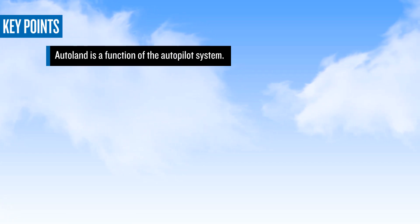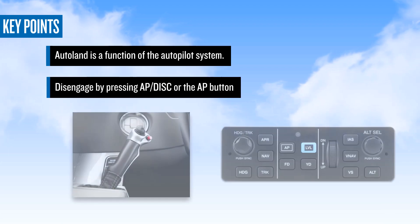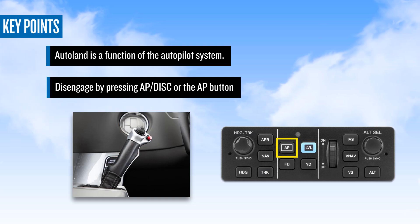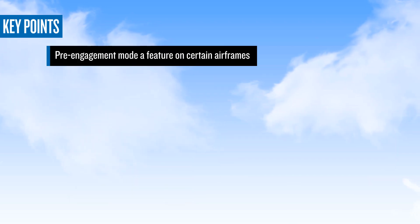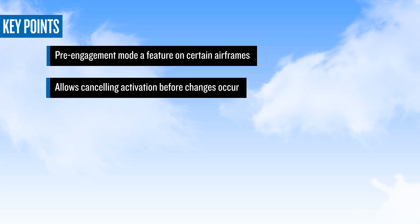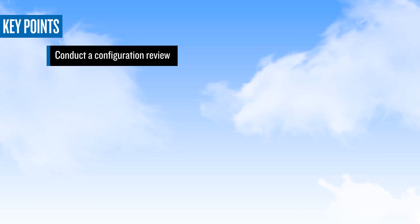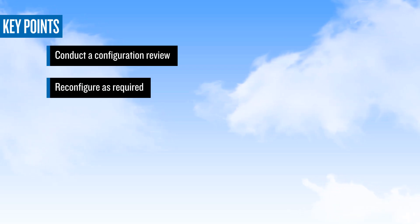Autoland is a function of the Autopilot system. It disengages the same way you disengage the Autopilot normally, by pressing the AP disconnect button on the flight control or the AP button on the mode controller. The pre-engagement mode, a feature on certain airframes, allows for canceling inadvertent or undesired activation of the system before configuration changes occur. If deactivating Autoland once full engagement has occurred, conduct an aircraft configuration review and make changes as needed for continued flight. Thank you for investing your time in learning more about the Garmin Autoland system.